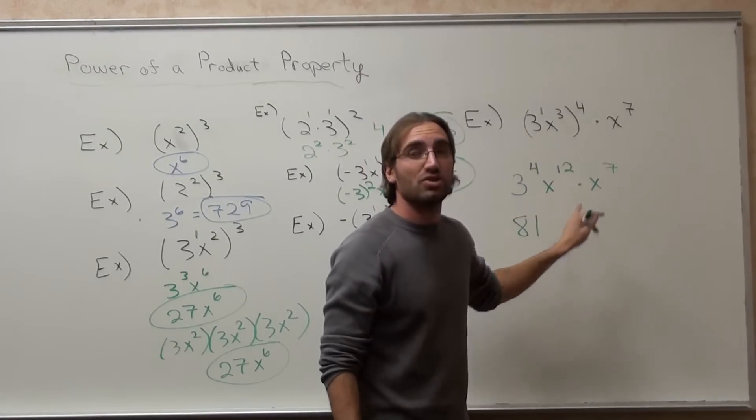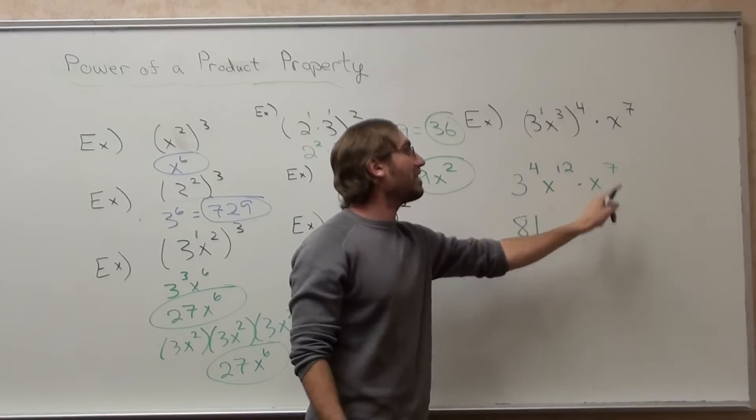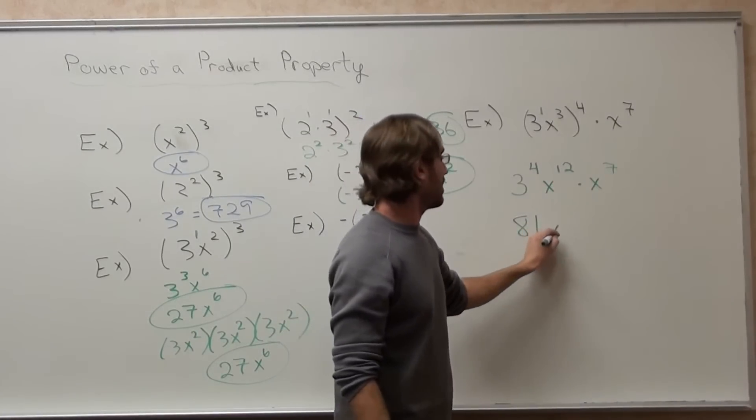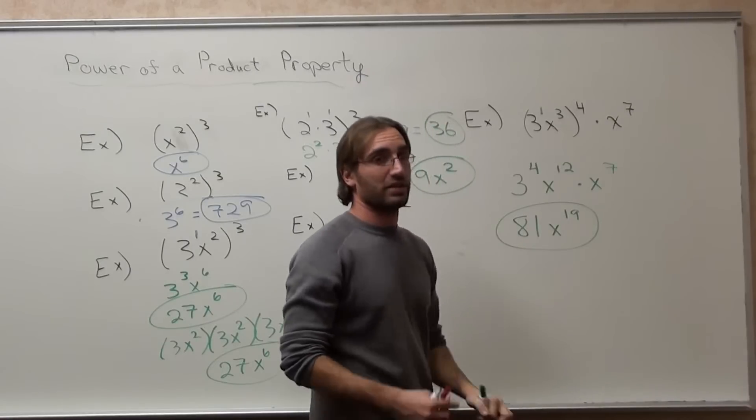x to the 12th times x to the 7th. Now, you've got two bases, and there's a multiplication symbol in between, so you add these exponents. 81x to the 19th.